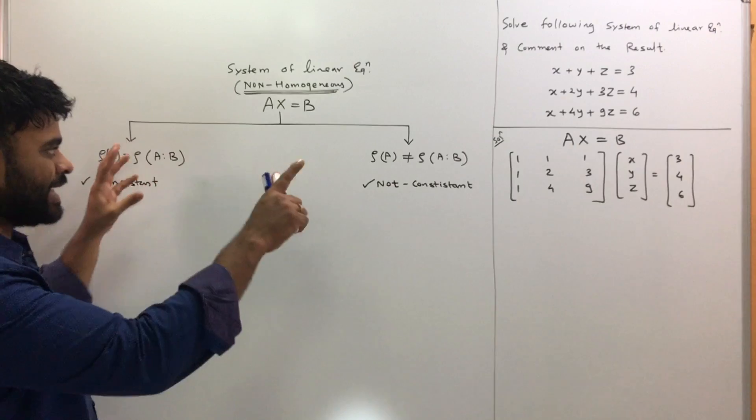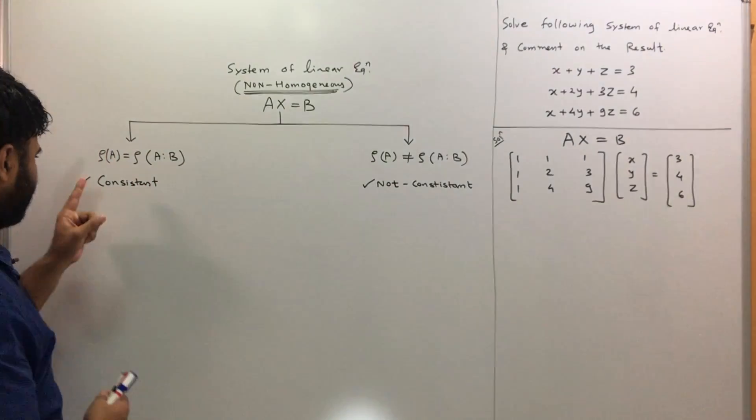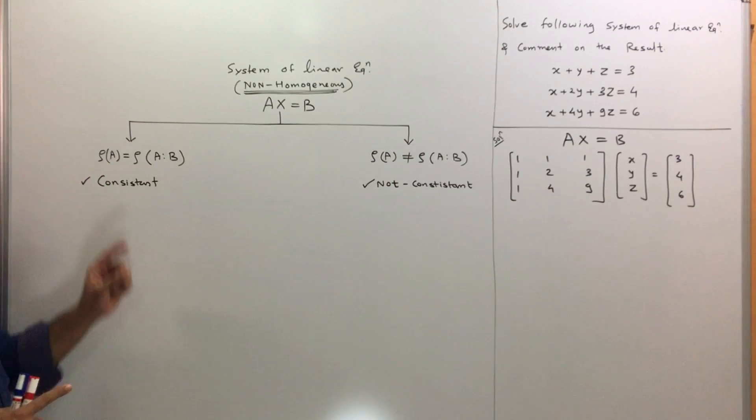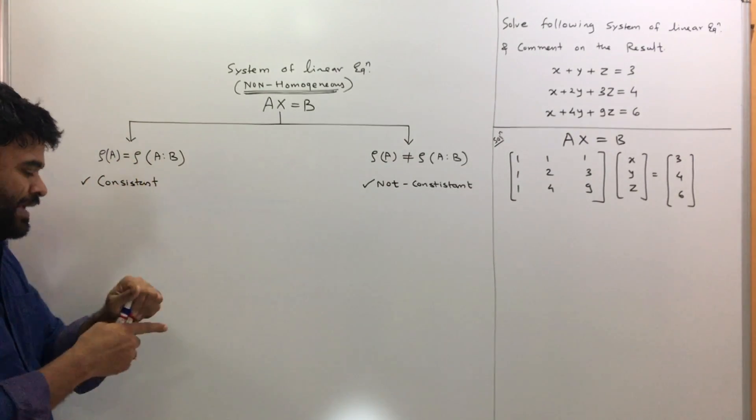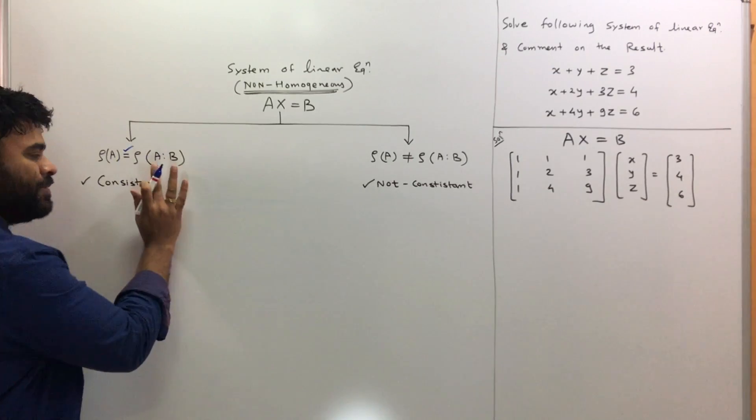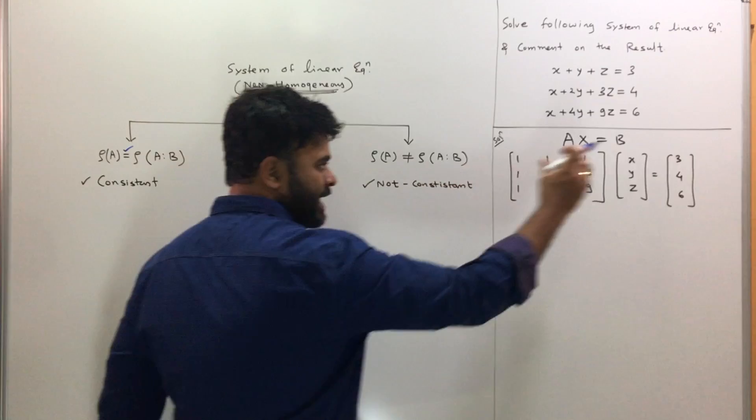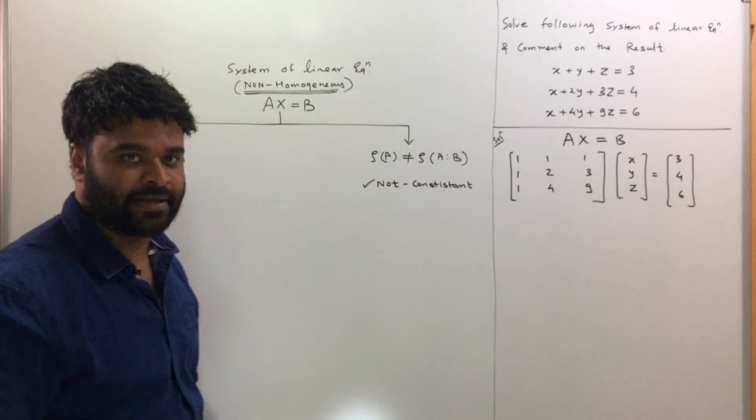Once I write this as AX = B, there are two cases possible. If you see the first one, rank of A and rank of A colon B—if these two are equal. A colon B is just A and B clubbed together, which is called the augmented matrix.